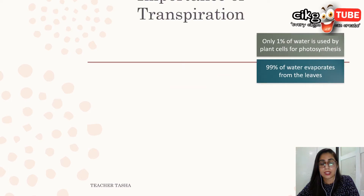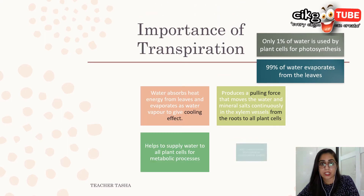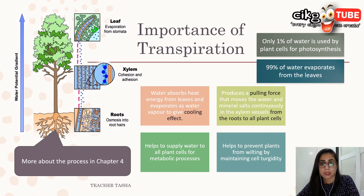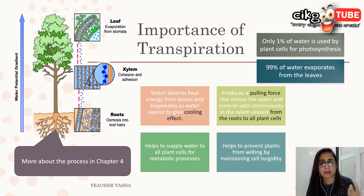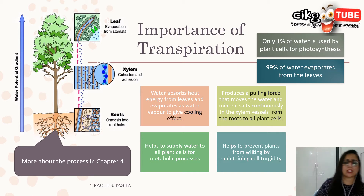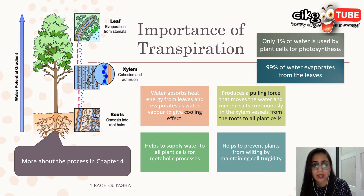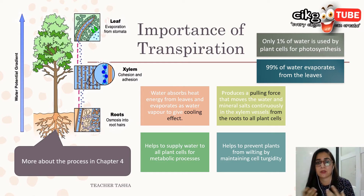Now let's look at the importance of transpiration. Only one percent of water is used in plant cells for photosynthesis — the rest, 99%, evaporates from the leaves into the atmosphere. So why does the plant need to absorb so much water?